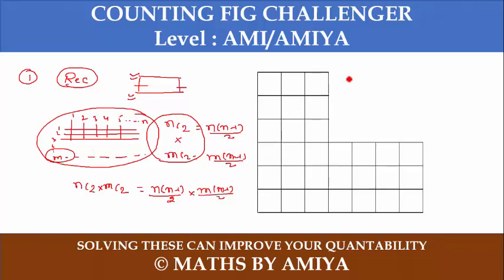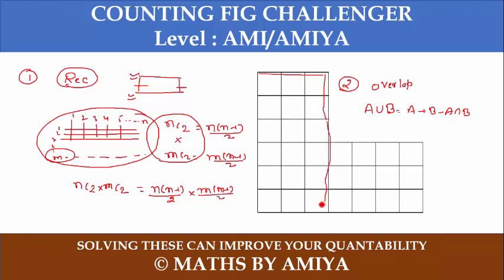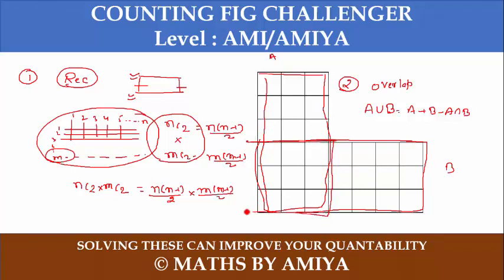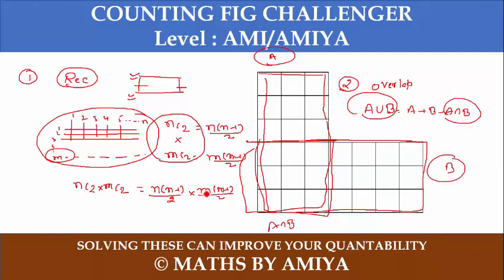In the case of overlap on this figure, we apply the union formula: A union B equals A plus B minus A intersection B. So we need to find the number of rectangles in segment A, the number of rectangles in segment B, and the number of rectangles in A intersection B to get the final answer.